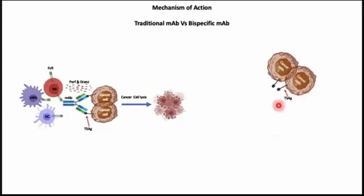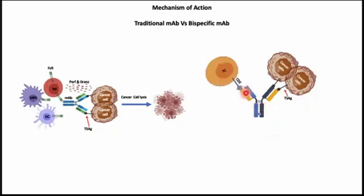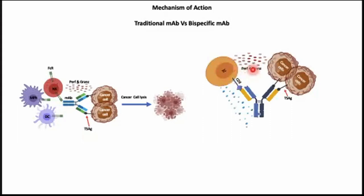On the cancer cell, the same tumor-specific antigen is present. One arm of the bispecific monoclonal antibody binds to the tumor-specific antigen, and the second arm binds to the CD3 receptor on the T cells. So this process brings the T cell to the cancer cell, activates the T cell, so they can release particles and cytokines.